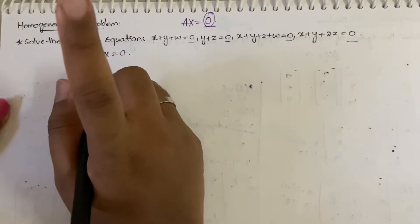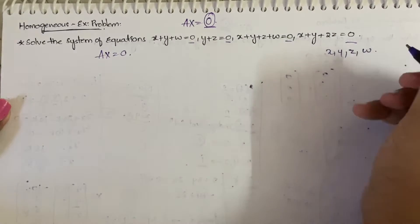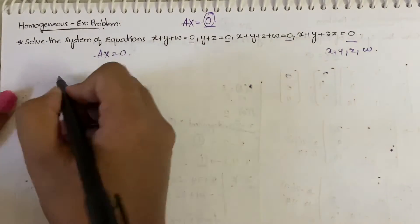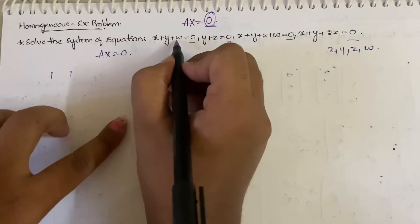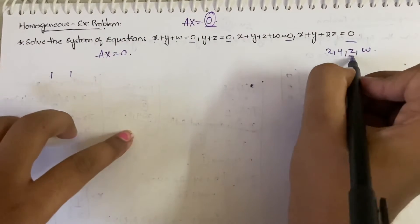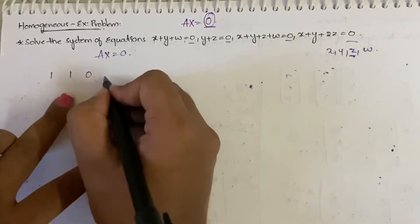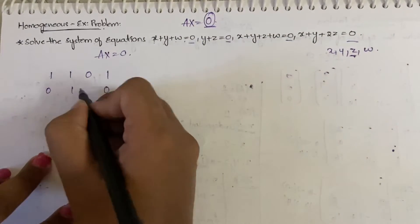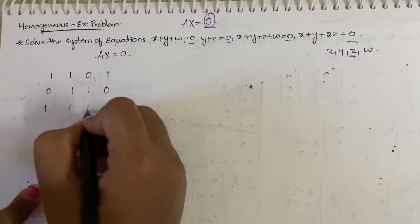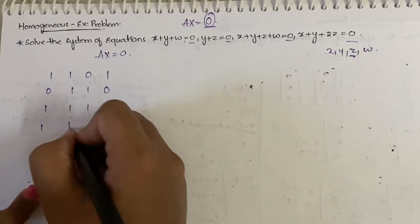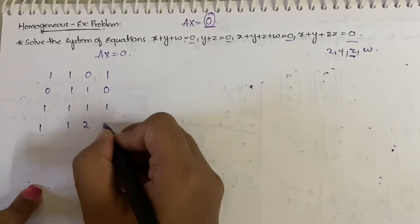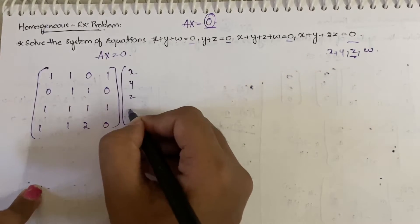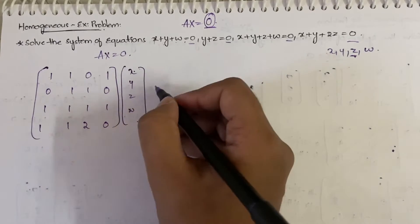The variables we have are x, y, z, and w (omega). We need to write the coefficient matrix. The coefficient of x is 1, y is also 1; we don't have a z term, so z is 0, and w is 1. In the next row, x and w are not present so they are 0; the remaining two coefficients are 1. Then we have 1, 1, 1, 1. Finally, 1 for x, 1 for y, coefficient of z is 2, and w is not there so 0.